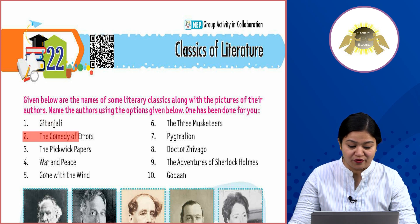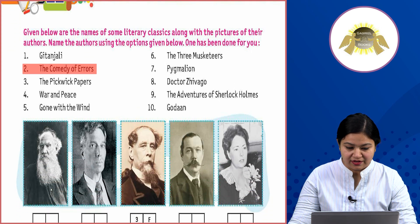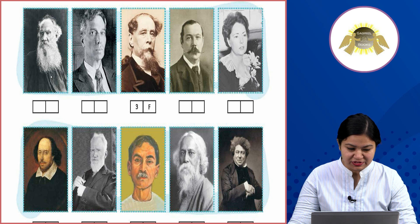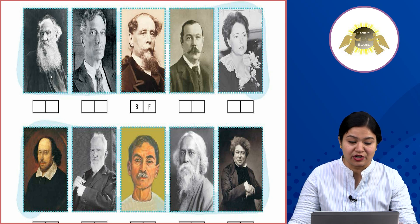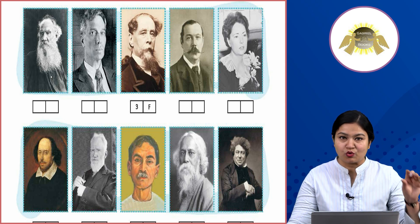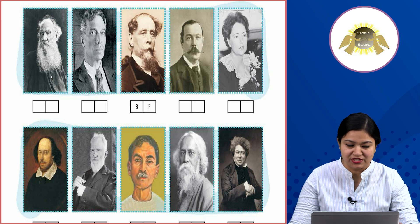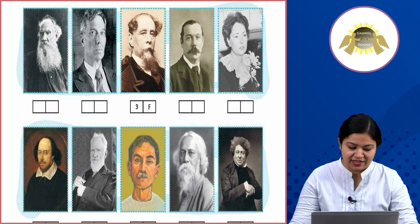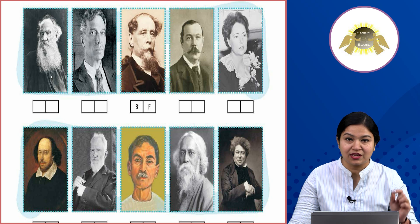The Comedy of Errors was written by William Shakespeare. In the second row, in the first picture, who is going to be? Shakespeare. So you will write here 'two' and the letter corresponding to Shakespeare's option.